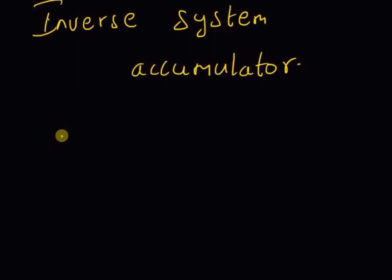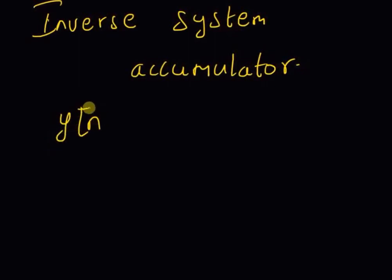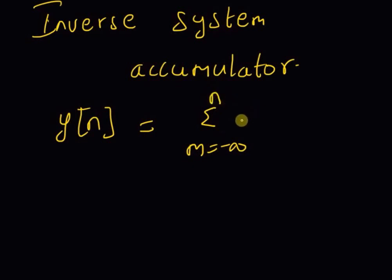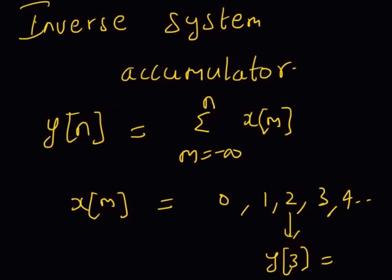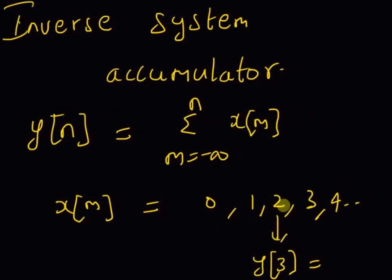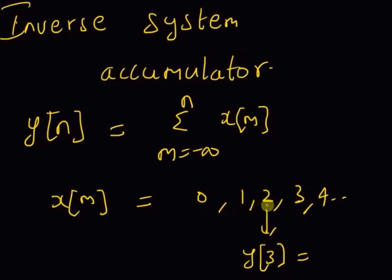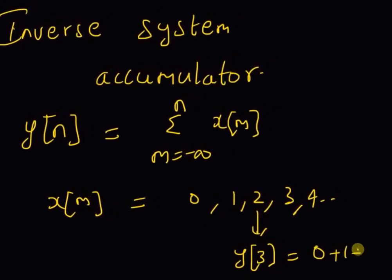First let us look at the definition of an accumulator. The output y(n) is equal to the summation from m equal to minus infinity to n of x(m), that is the current value. An accumulator basically adds all the values of the input signal up to the current value. For example, if x(m) is equal to 0, 1, 2, 3, 4 and so on, then y(3) is equal to 0 plus 1 plus 2, which is 3.